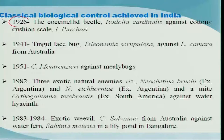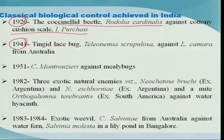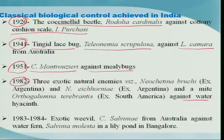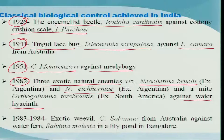In India, during 1926, the same cottony cushion scale Icerya purchasi was quite serious, and the same beetle Rodolia cardinalis was introduced to control it. Then during 1941, a serious plant, the lantana Lantana camara, became a quite serious weed in India. In order to control this weed, the tingid lace bug Teleonemia scrupulosa was introduced and is keeping this weed in check. In 1951, another lady beetle, Cryptolaemus montrouzieri, was introduced against mealybugs. Then in 1982, for the serious water weed water hyacinth, three exotic natural enemies were brought - two weevils, Neochetina bruchi and Neochetina eichhorniae, and a mite - which are keeping this weed under check.